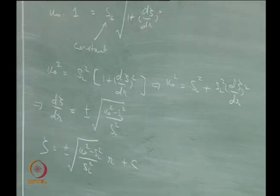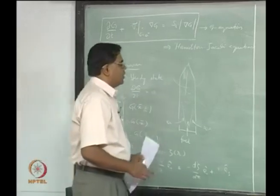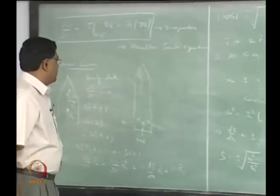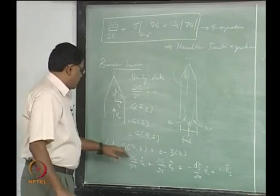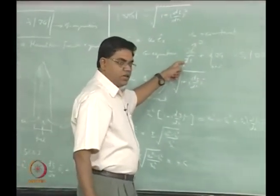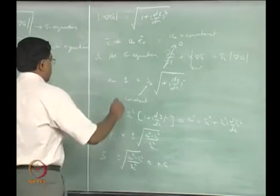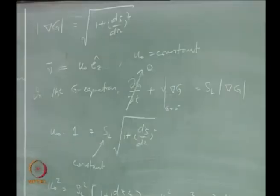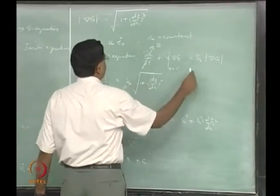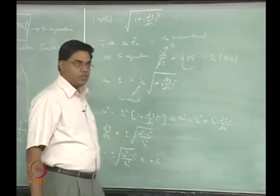If you kept the unsteady term, with G = Z − Zeta(R, t), you would have a partial derivative of Zeta with respect to t, and plugging in grad G gives the square root of 1 plus (dZeta/dR)² — that would actually be the Hamilton-Jacobi equation you can solve numerically for Zeta if you want to.